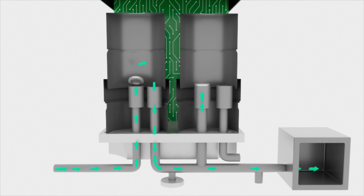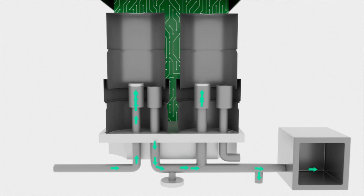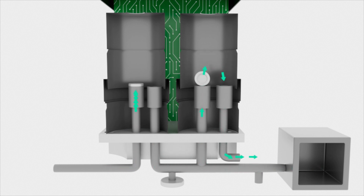The inlet valve closes and the exhaust valve opens. Output pressure relieves through the exhaust valve and orifice until vessel pressure reaches atmosphere.